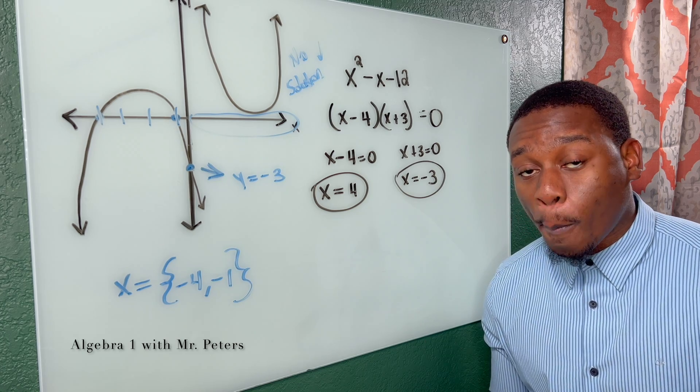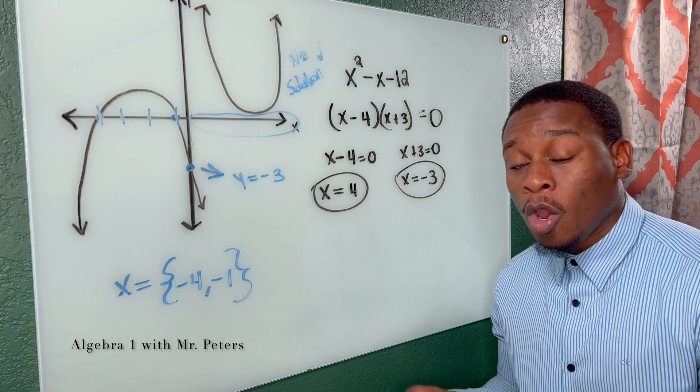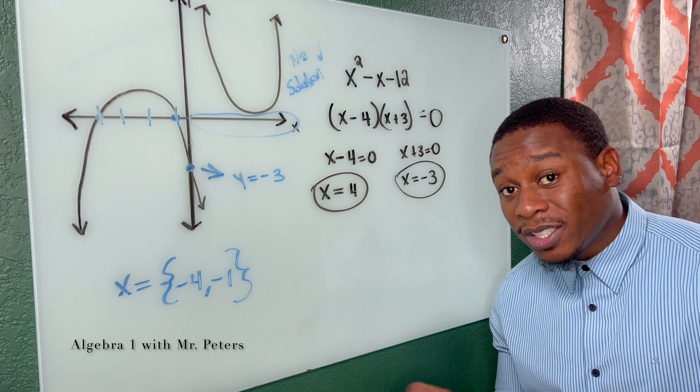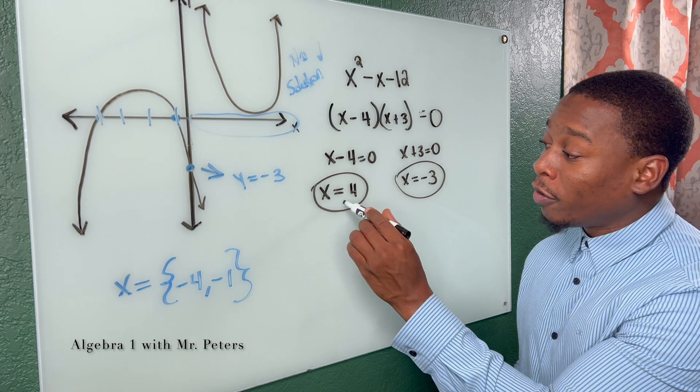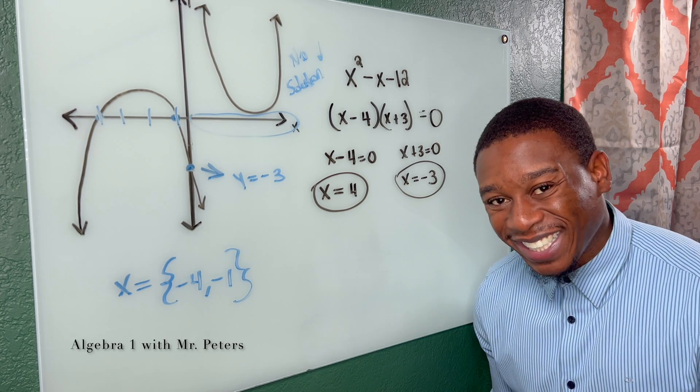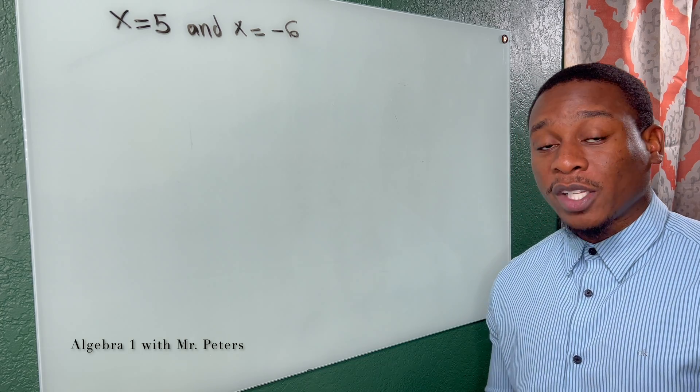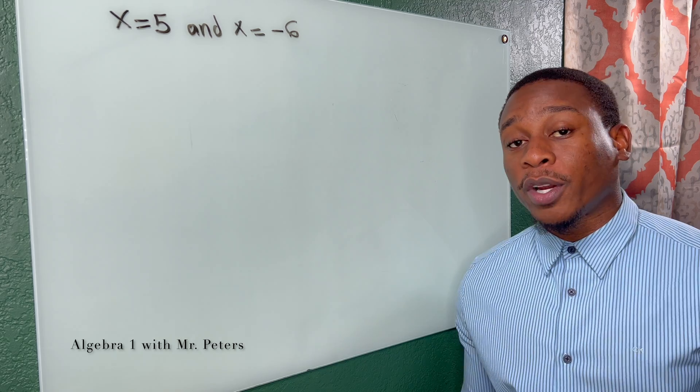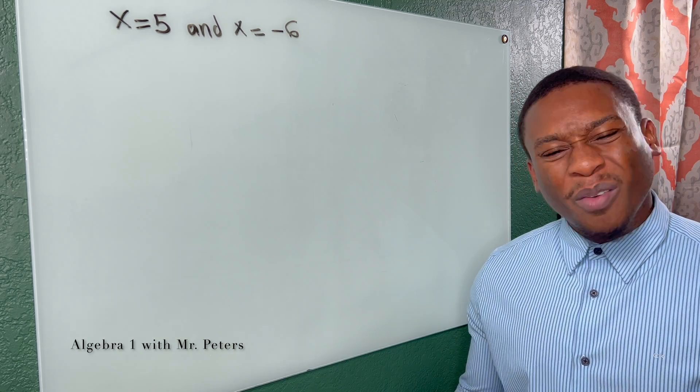But before we wrap this video up, we're now going to go to the last section where we figure out how to create a quadratic equation when we have just x is equal to four and x is equal to negative three. In the last part of this video guys, we have the roots. We're now trying to create the quadratic equation. And we're just working backwards.